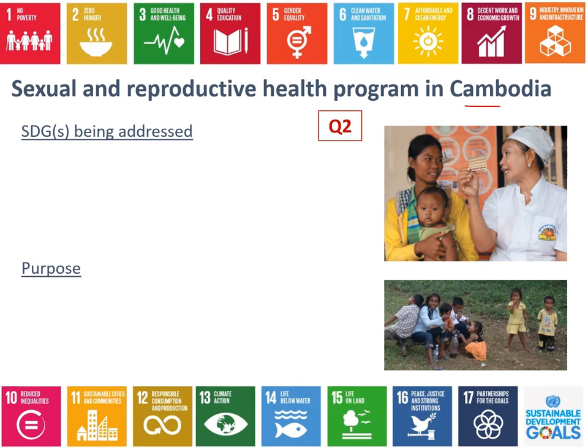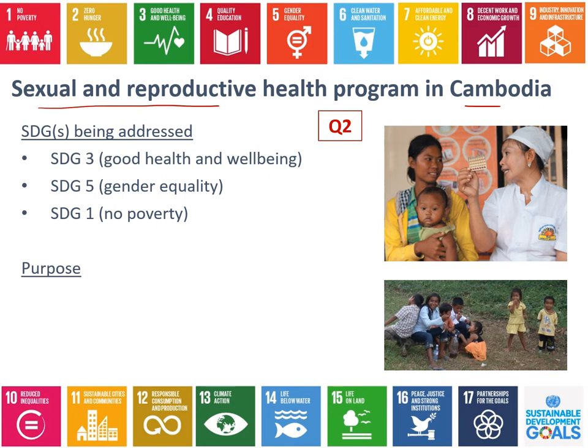Think about what SDGs might be addressed in a sexual and reproductive health program. The first is SDG 3, good health and well-being. Two key features of SDG 3 are maternal health and decreasing preventable deaths of newborns and children, both of which can absolutely be addressed in this program.